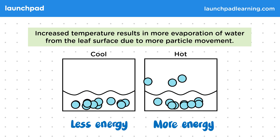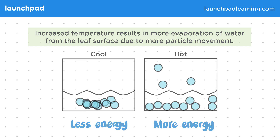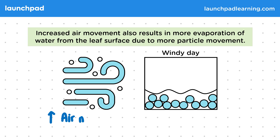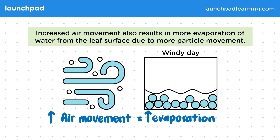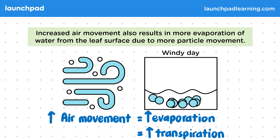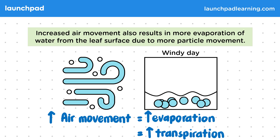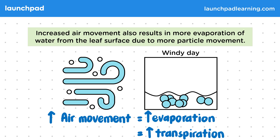So how does increased air movement affect transpiration? Increased air movement also results in more evaporation of water from the leaf surface due to more particle movement. So if there's an increase in air movement, for example on a windy day, there's an increase in evaporation and also an increase in transpiration. A breeze can help water evaporate and can also help to carry away water vapor that has diffused out of the leaves. For the exam, you need to be able to explain that increasing air movement will increase evaporation and therefore increase transpiration.